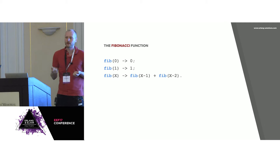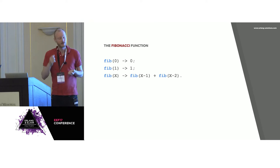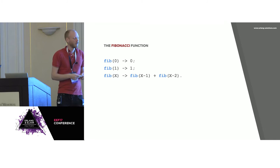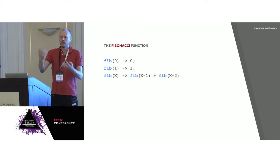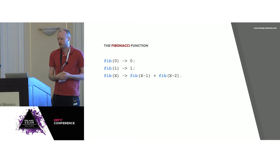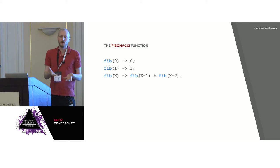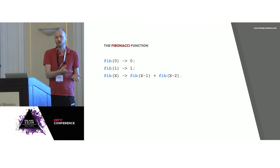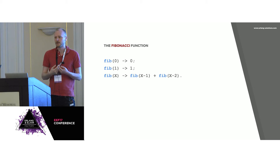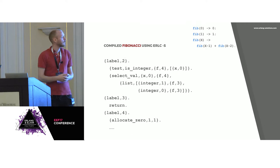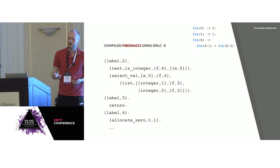This is the example I'm going to work through for most of the presentation today. It's a familiar function for most people — calculating a Fibonacci number. If we take this code and compile it using the Erlang compiler, we get what's called the BEAM format. The BEAM format is what's inside the dot-beam files that are generated when you compile a file.